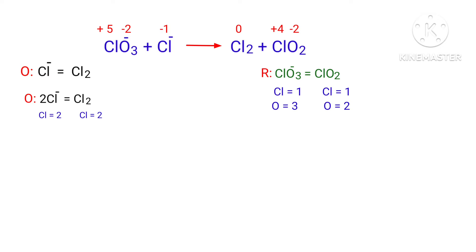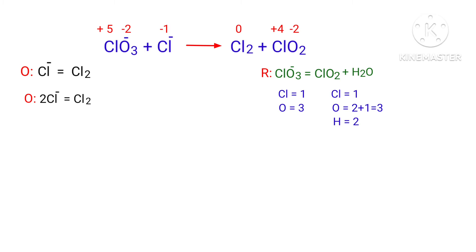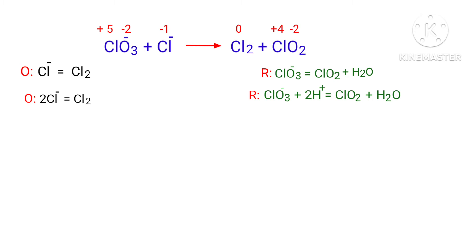Now balance the number of atoms in the reduction half reaction. In the reduction half reaction, to balance the oxygen atoms, you can produce water molecules. The oxygen atoms are balanced. Now we need to balance the hydrogen atoms. To do this, you can produce H+ ions. Now the number of atoms are balanced in the reduction half reaction.